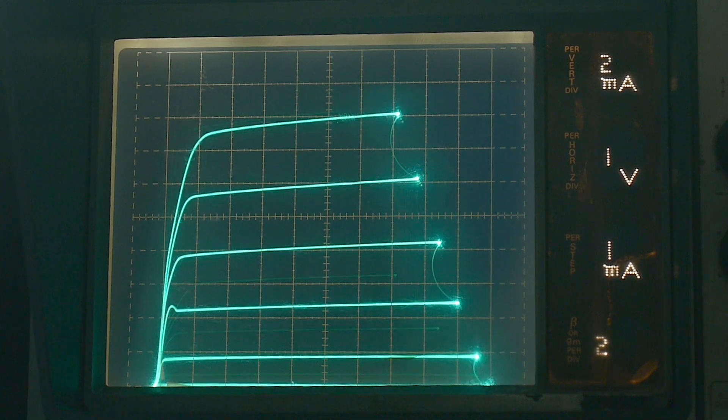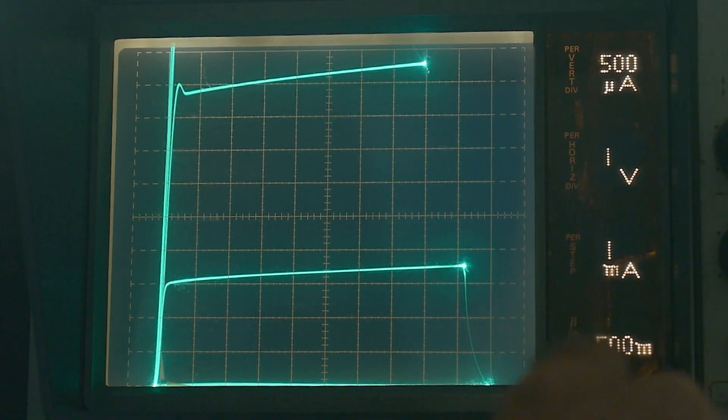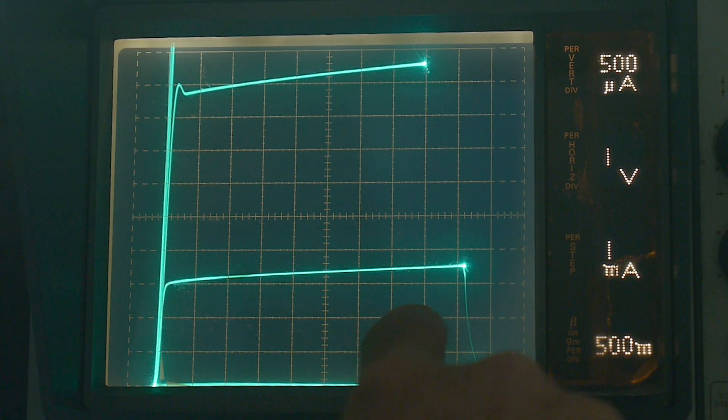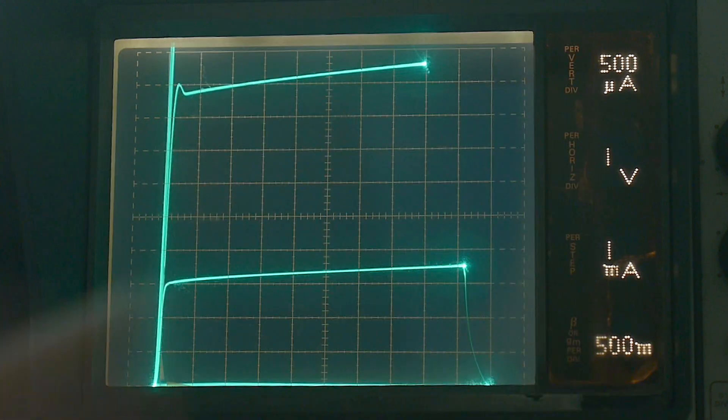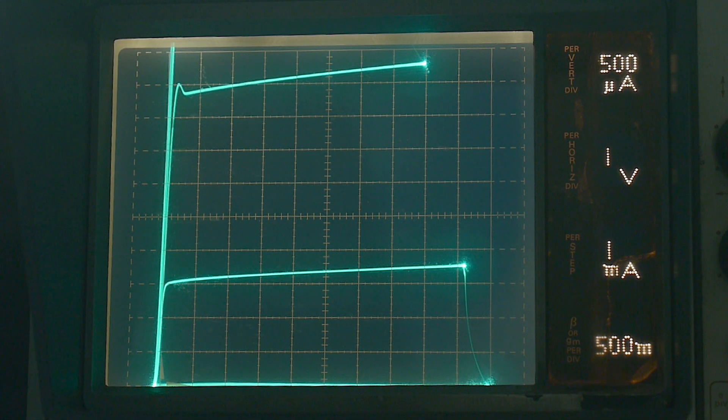So yeah, the gain of this thing is really, really, really low. So let's move this up so we can read it better. So here's 1.5. So one point, it has a beta of, HFE of, one point, yeah, 1.75. So how's that for a transistor? I love it.